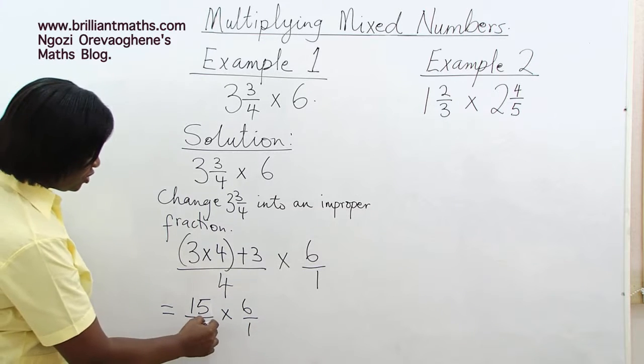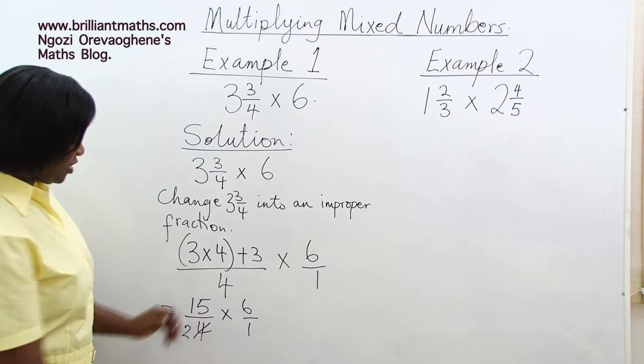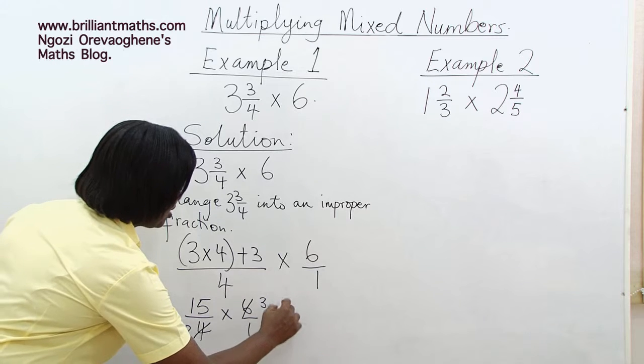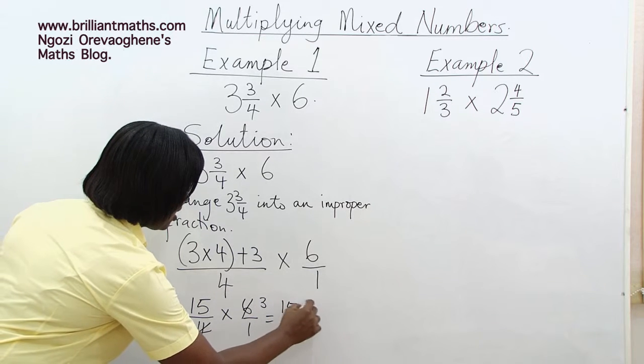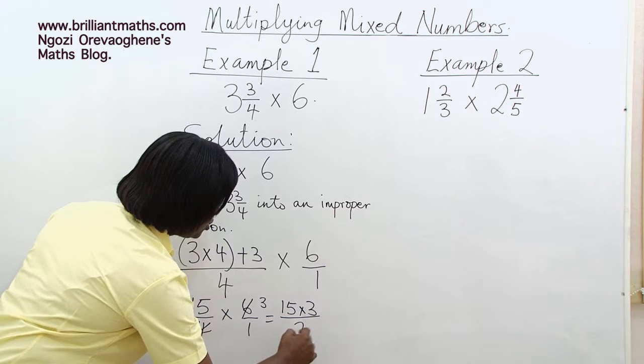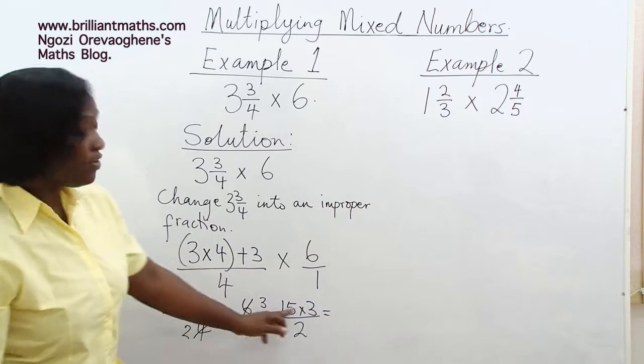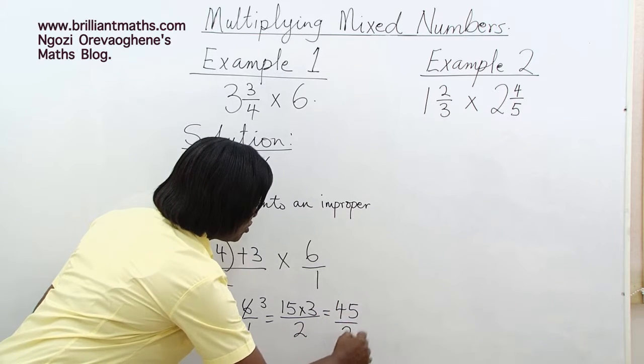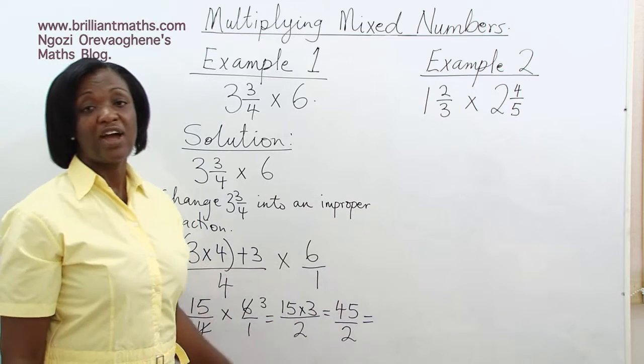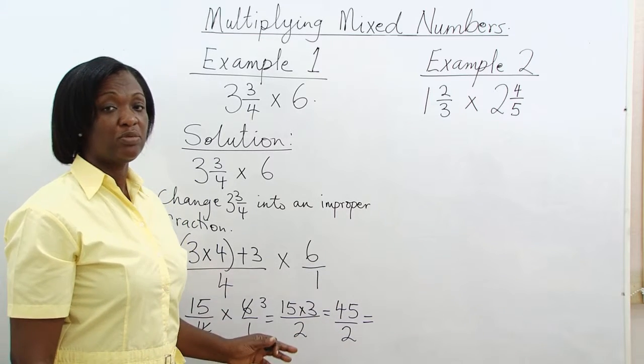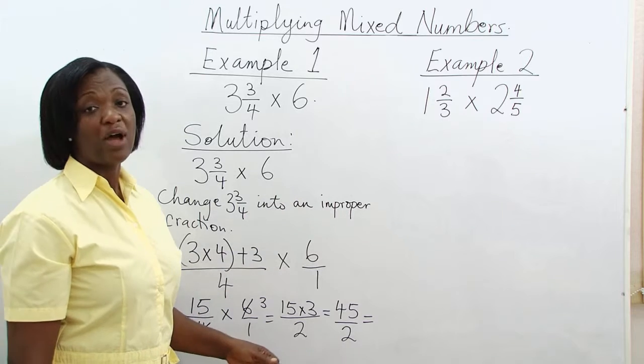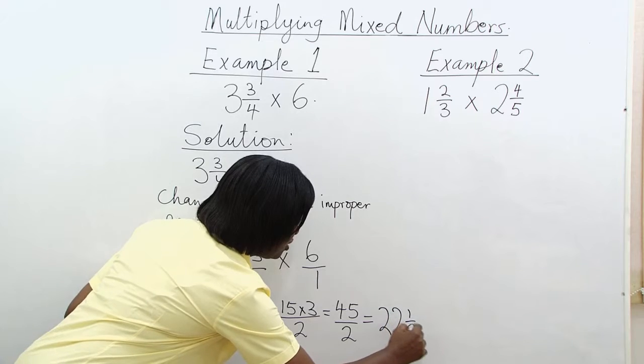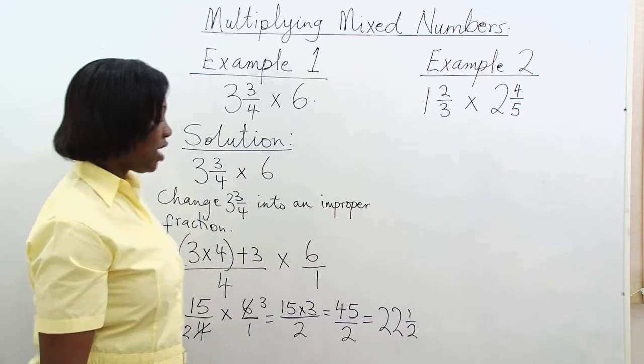Common factors: 2 in 4 is 2, 2 in 6 is 3. We have 15 times 3 as a numerator all over 2. That gives us 15 times 3 is 45 over 2. And this will be equal to 22 and half, because 22 times 2 is 44 and we have a remainder of 1. The answer is 22 and a half.